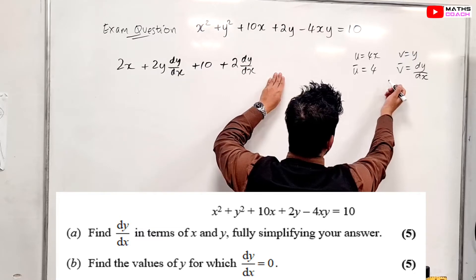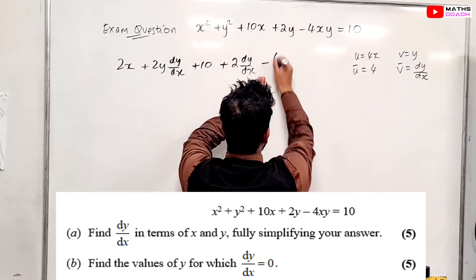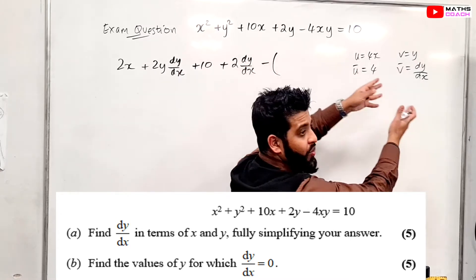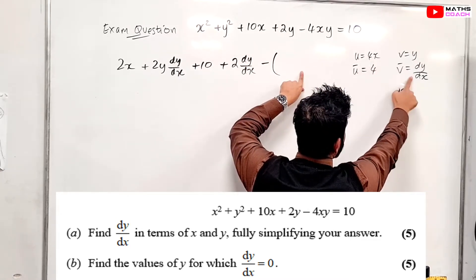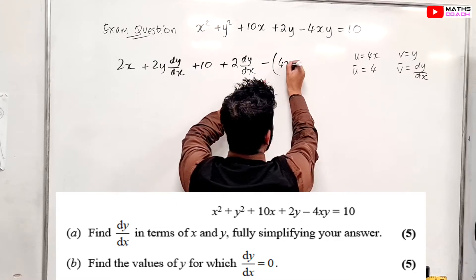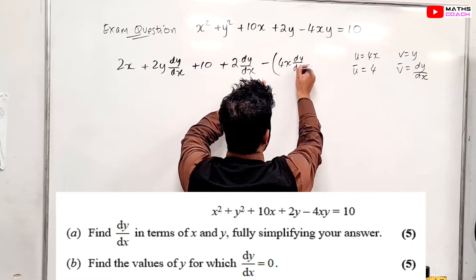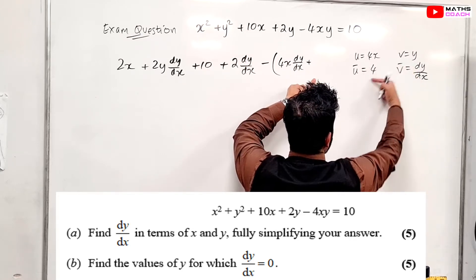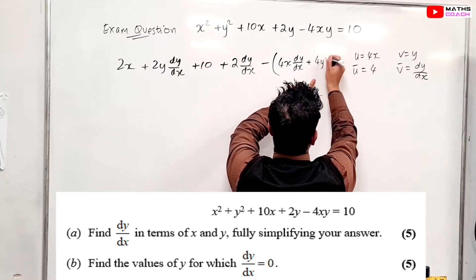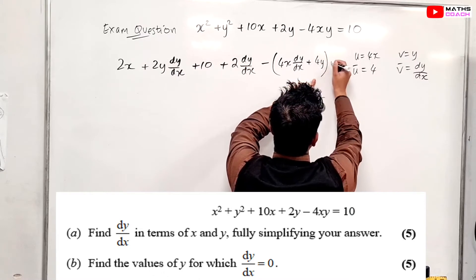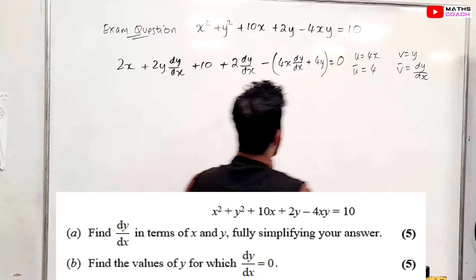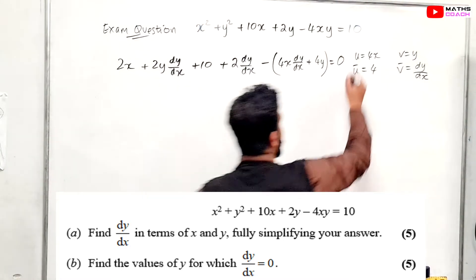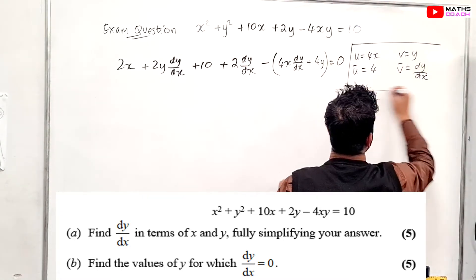Let's put the product rule together. We're going to have a minus, and I'll put this into brackets because the minus may affect what's inside. So we get 4x·(dy/dx) plus v times the differentiation of u, which is plus 4y. Then the constant 10 becomes a 0.